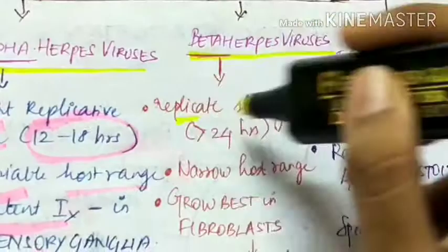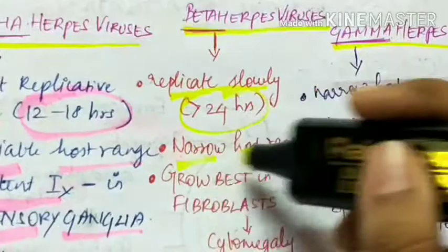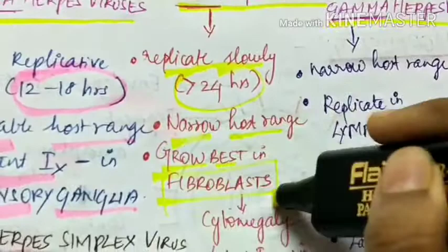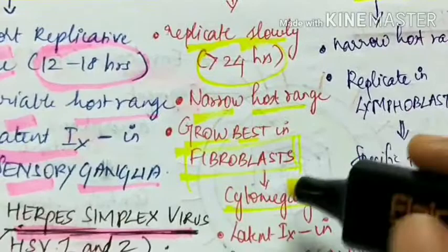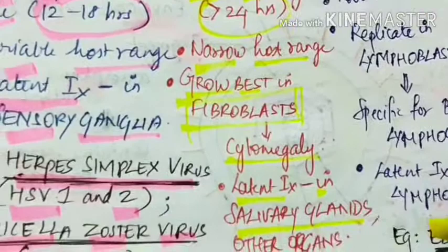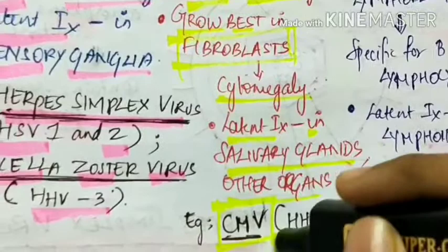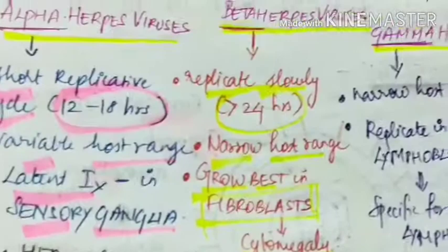Beta herpes viruses replicate slowly, taking more than 24 hours. They have a narrow host range, grow best in fibroblasts, and produce cytomegaly — an increase in cell size. They cause latent infection in salivary glands and other organs. The example is cytomegalovirus, which is human herpes virus 5.